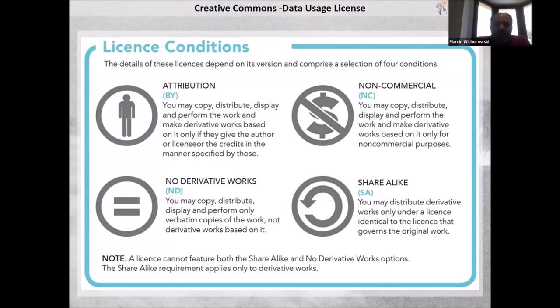Regarding licensing, everybody has heard of Creative Commons. Usually the Attribution part of Creative Commons is the license used most for data sharing. It allows copying, distributing, displaying, performing the work and making derivatives, provided you give credit to the author or licensor in the specified manner.